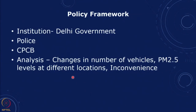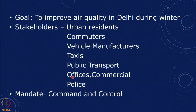In terms of institutions and the policy framework: the institutions involved are the Delhi government, the police, and the Central Pollution Control Board. We can analyze changes in the number of vehicles, look at particulate matter less than 2.5 microns at different locations, and look at what happens in terms of inconvenience to people. The goal is to improve air quality in Delhi during winter, and there are multiple stakeholders.